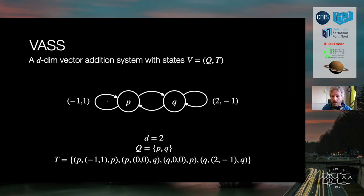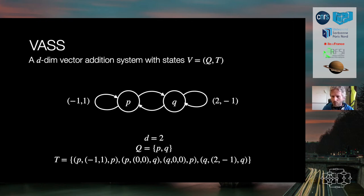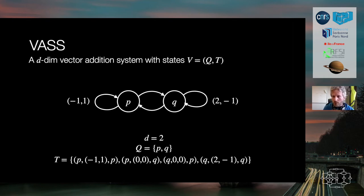For instance, consider this example: a VASS in dimension two with two counters modified by executing transitions. There is a loop on state p that removes one from the first counter and adds one to the second — so iterating this loop transfers the value of the first counter to the second one. The other loop on q does something similar except it adds two. The transitions between p and q are labeled by the zero vector, meaning the counters are untouched.